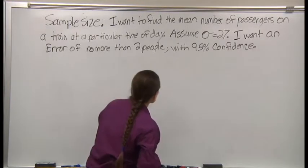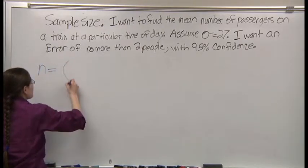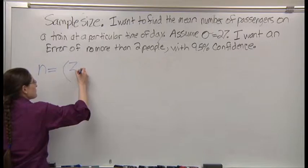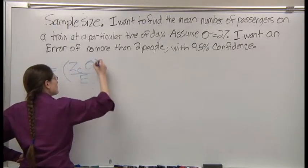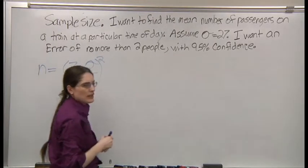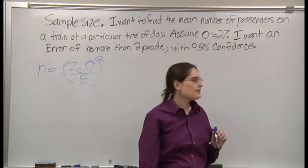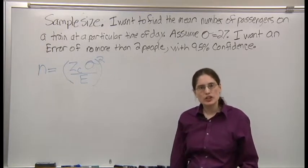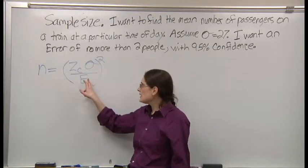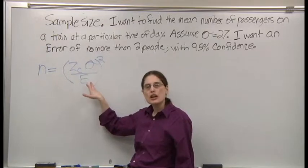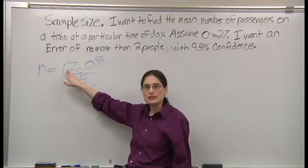So there's a formula for that. This might look a little bit familiar. It is, in fact, the good old error formula turned upside down. E is the maximum error that you're willing to tolerate. This is still the standard deviation. This is still z.